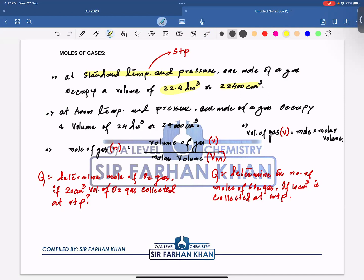Second condition that we have in A-level chem, that is room temperature and pressure. Remember, we have to represent a volume of 24 dm³. In centimeter cube, 24,000.